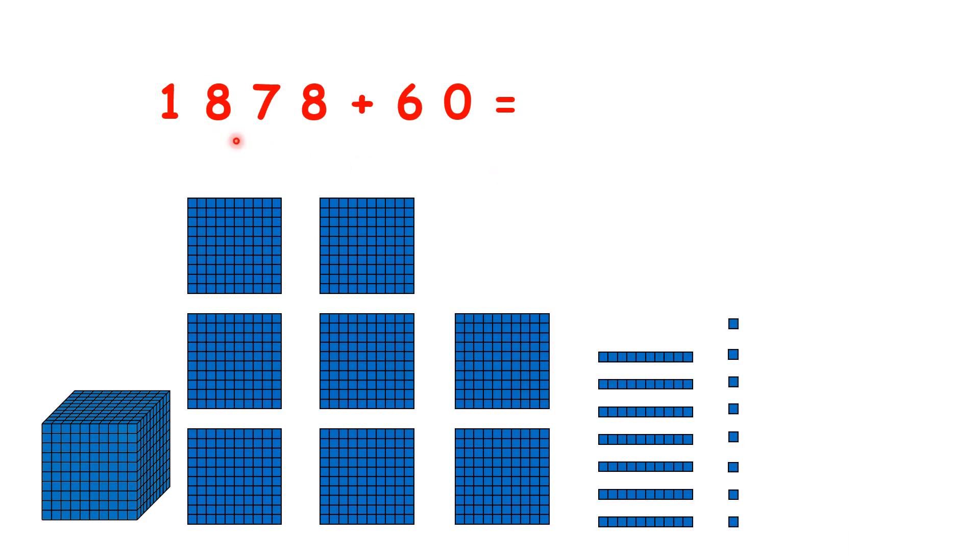So finally, pause the video, and see if you can work out 1,878 plus 60. We have 7 tens and want to add 6 tens, but that would give us 13 tens. So rather than 7 tens, let's take the tens and hundreds together. And to see why we do that, let's start adding our 6 tens.